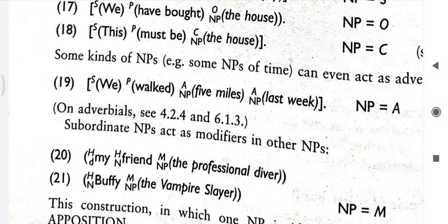There are also noun phrases related to the concept of time that can act as adverbials. For example, 'we walk 5 miles last week'. Here '5 miles' is a noun phrase — 'miles' is a noun and 'five' is an enumerator. 'Last week' is also a noun phrase — 'week' is a noun and 'last' is an enumerator — functioning as an adverbial of time.